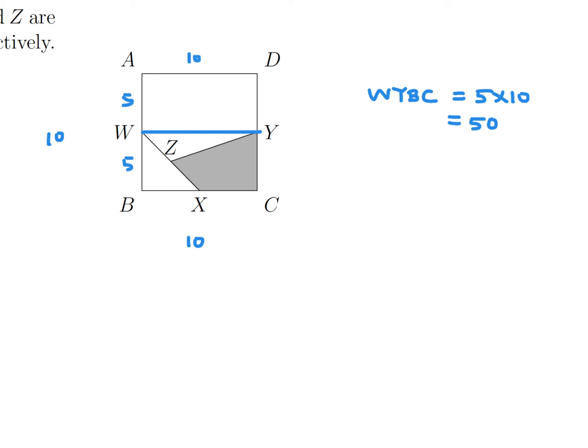And since X is the midpoint of BC, that's also 5. So that triangle W, B, X would be 1 half base times height, which is 1 half times 5 times 5, which is 12.5.